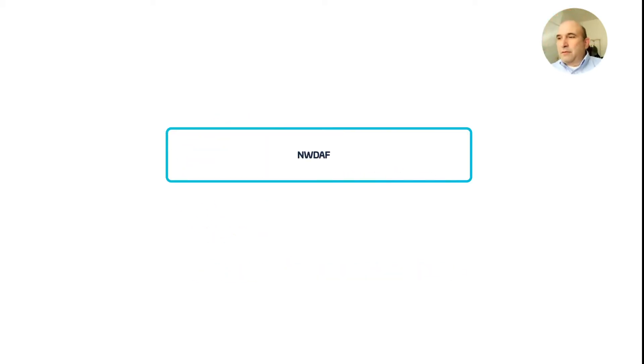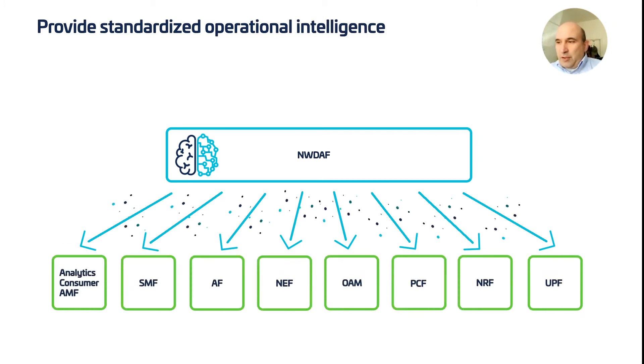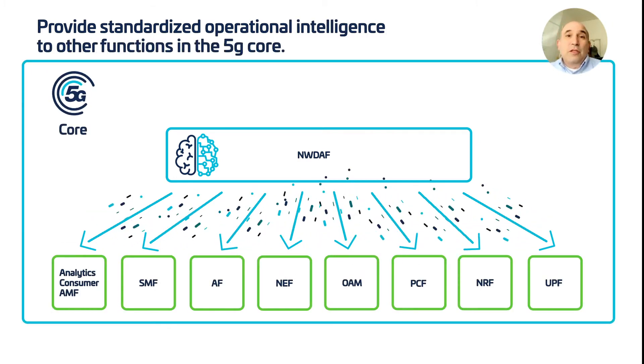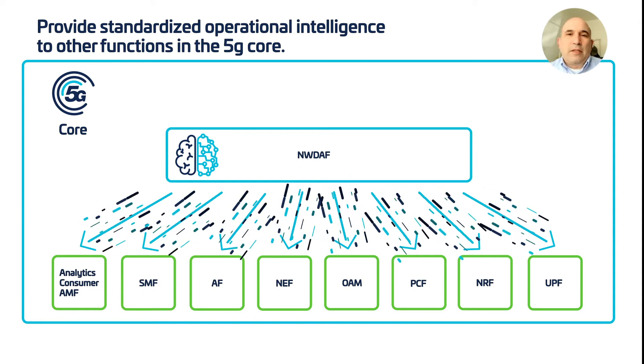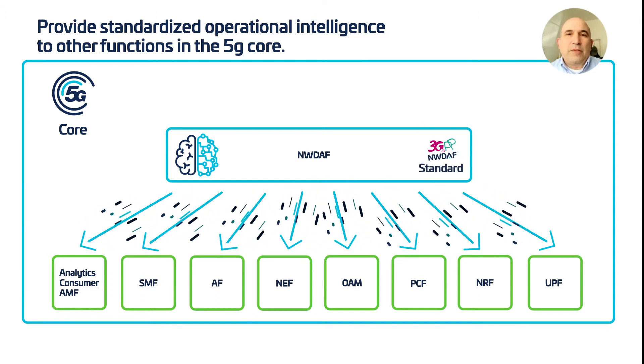The purpose of the network data analytics function is to provide standardized operational intelligence to other functions in the 5G core. The network data analytics function is a standardized network function defined by the 3GPP as part of the 5G standalone service-based architecture.